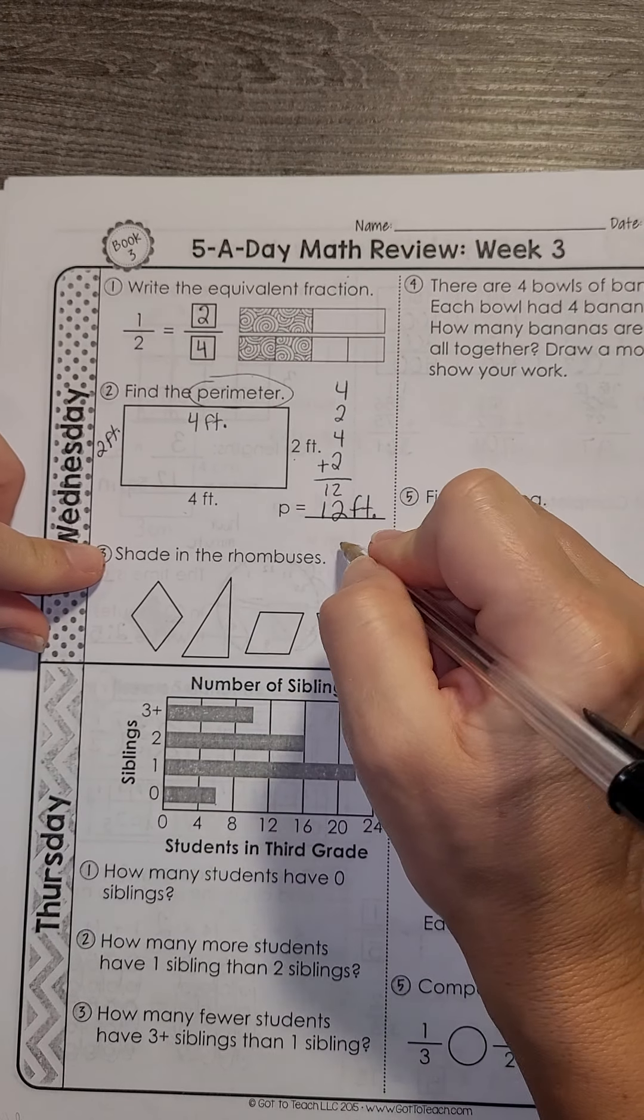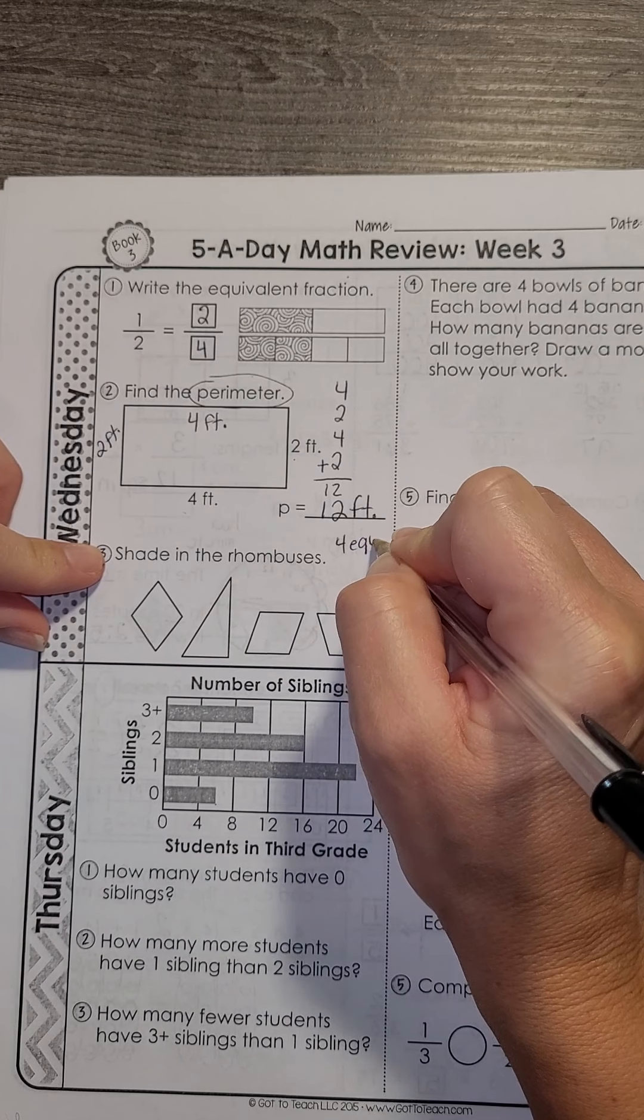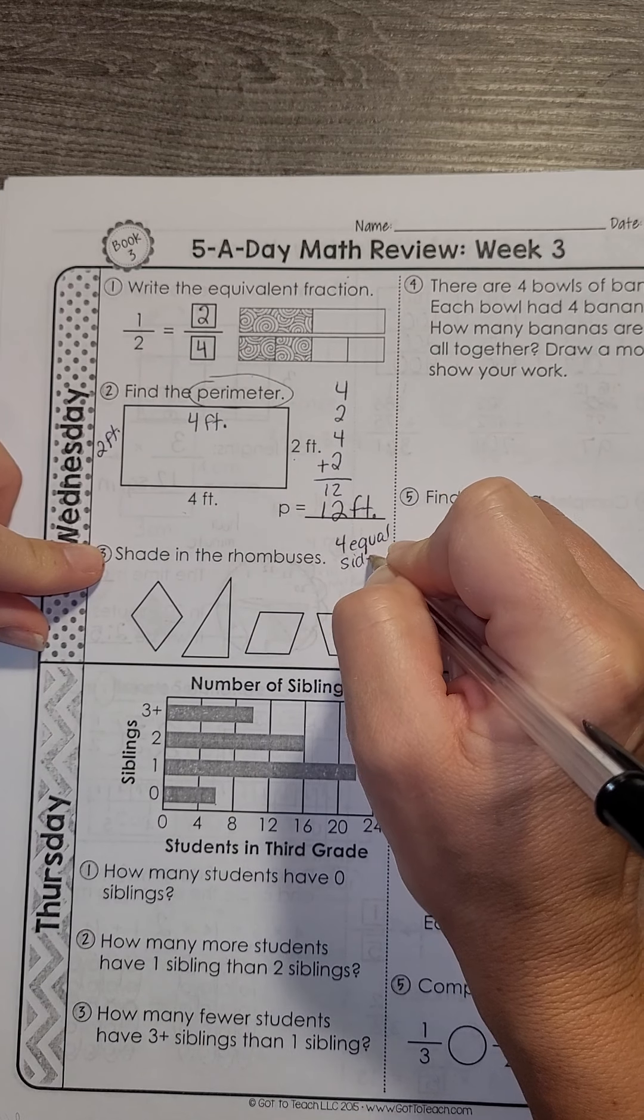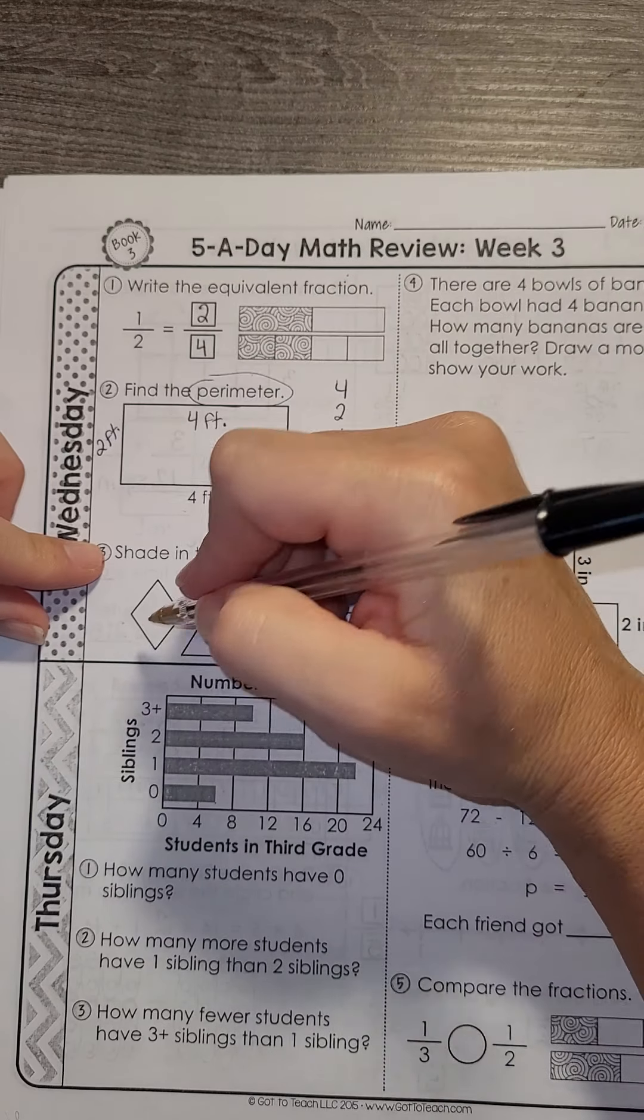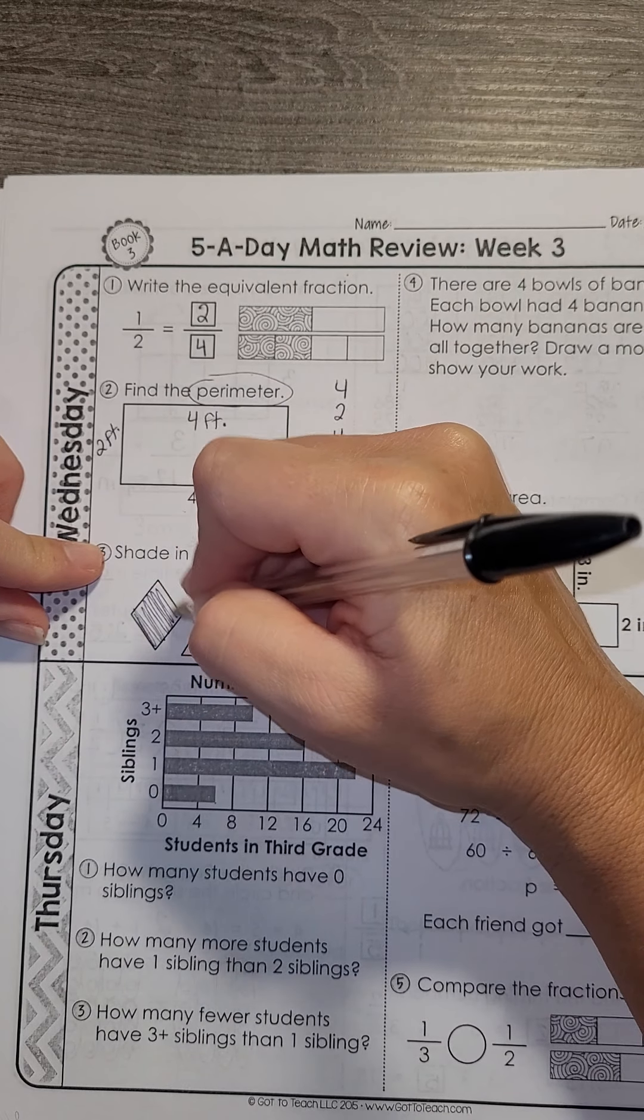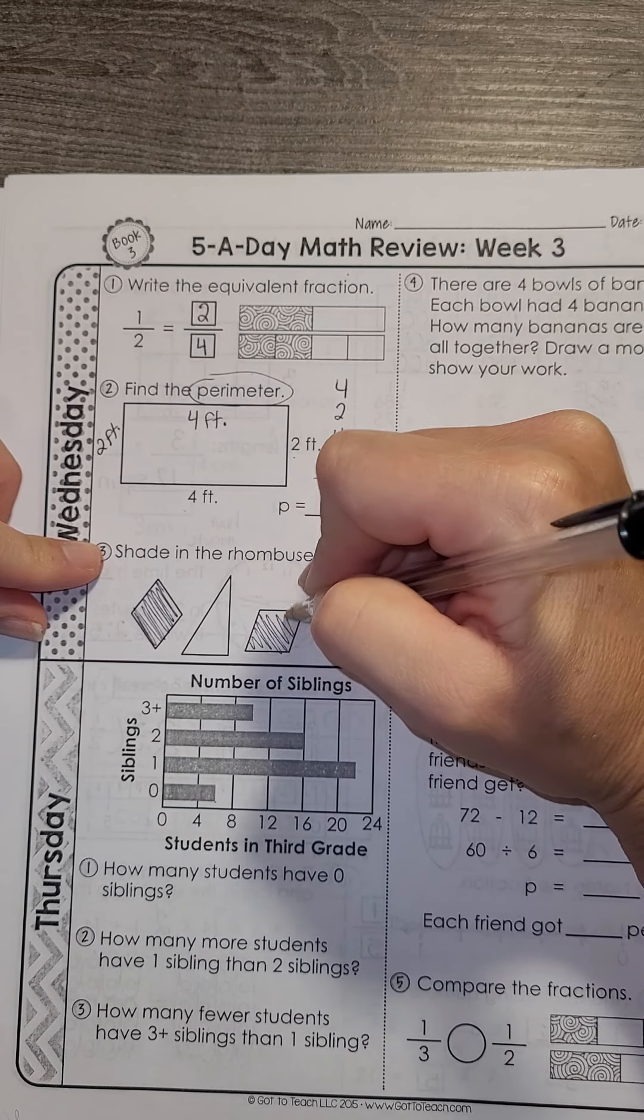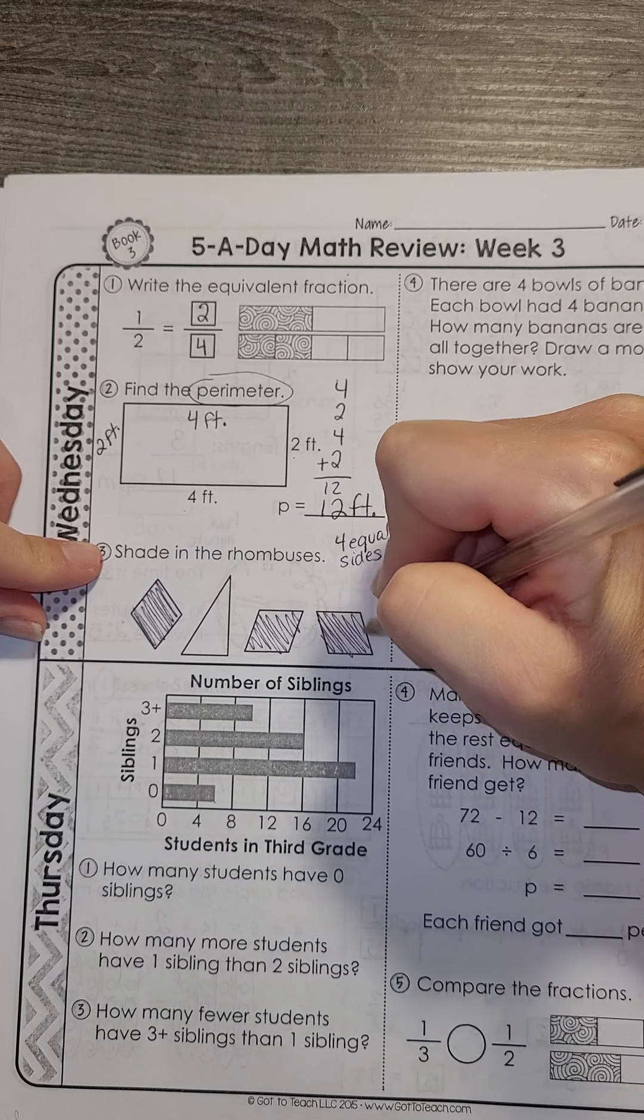Rhombuses, 4 equal sides. But they do not have to have right angles. And so our rhombuses are 1, 2, and 3.